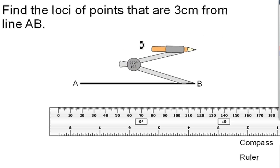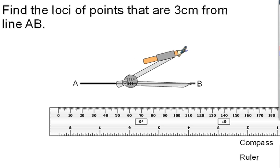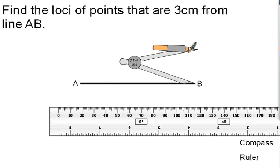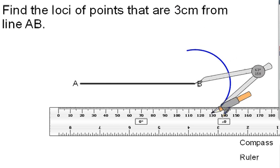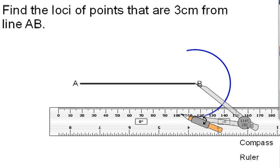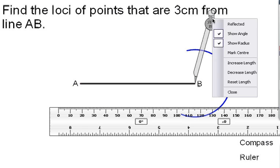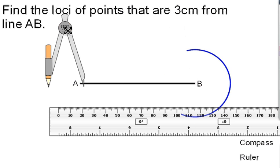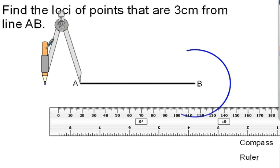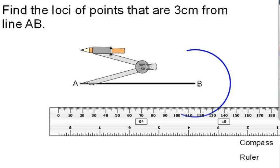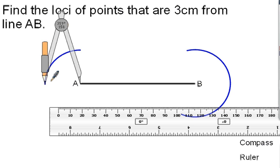Then the first thing we're going to do is we're going to find the loci of the points that are 3cm away from point B. We're then going to go over to the other end, point A. Again, find the loci of the points that are 3cm away from point A.